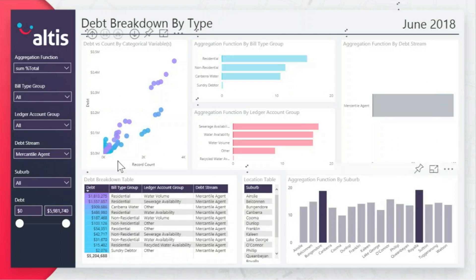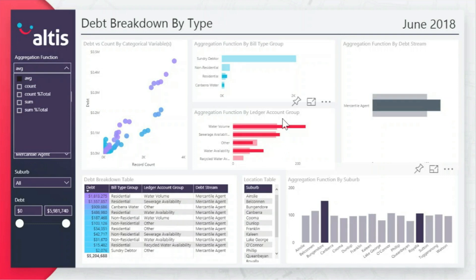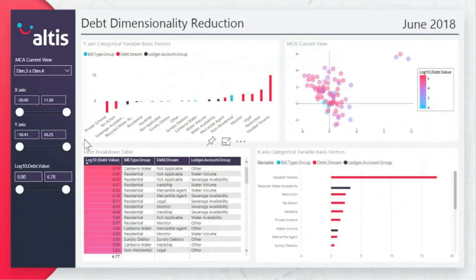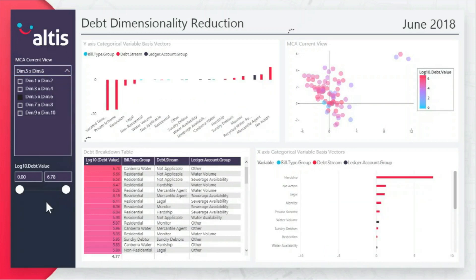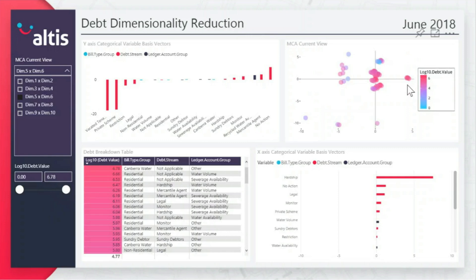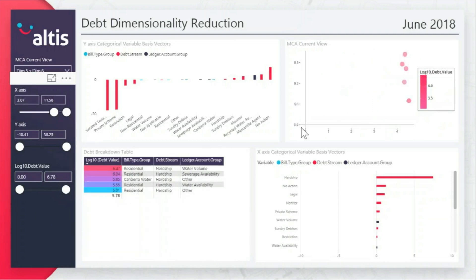We can identify abnormal locations and explore noticeable differences compared to average values to investigate potential causes. Use dimensionality reduction to visualize multiple variables at once to find interesting anomalies and their relationship to the distribution of debt. This is a quick way to automatically find useful insights and see variation in complex data.